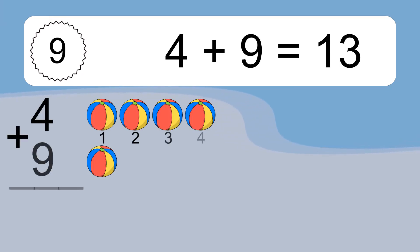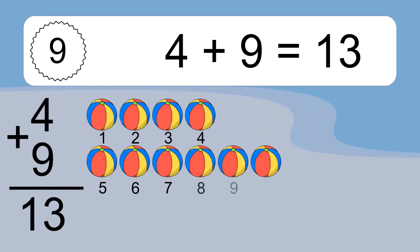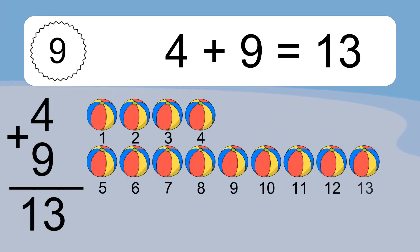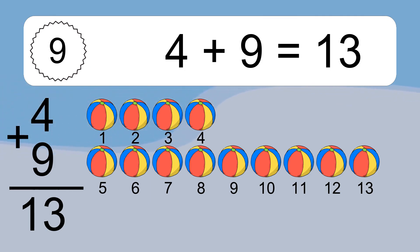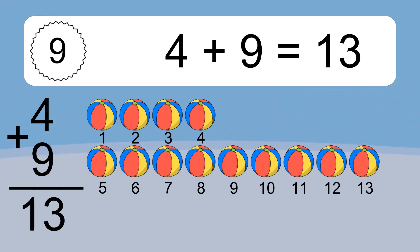4 plus 9 equals 13. Let's count it. 1, 2, 3, 4, 5, 6, 7, 8, 9, 10, 11, 12, 13.